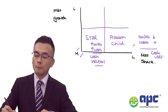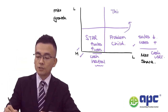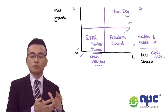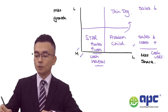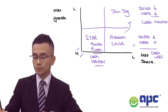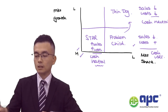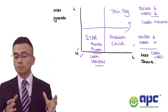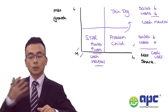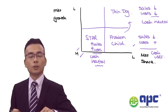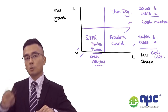The Problem Child may be turned into a Thin Dog. If it's a Thin Dog, the relative market share is quite low, market growth is quite low, and therefore both sales and costs will be low — again, cash neutral. At the end of the industry life cycle, most products could finally become the Thin Dog. A business could then harvest it or divest it.